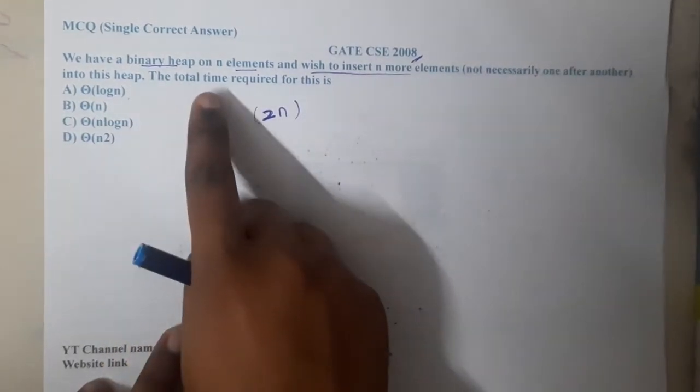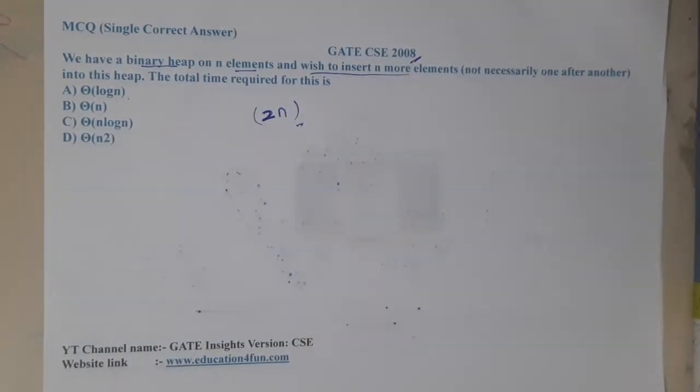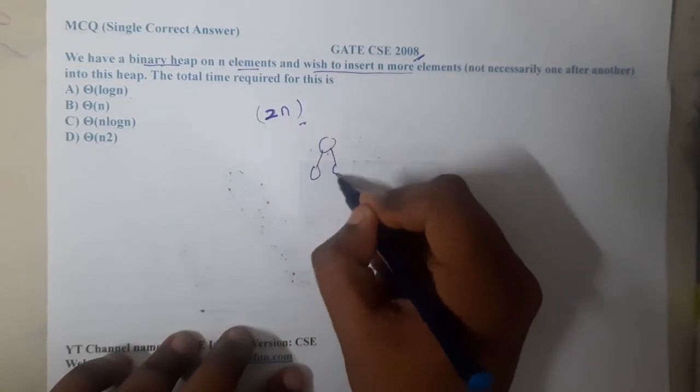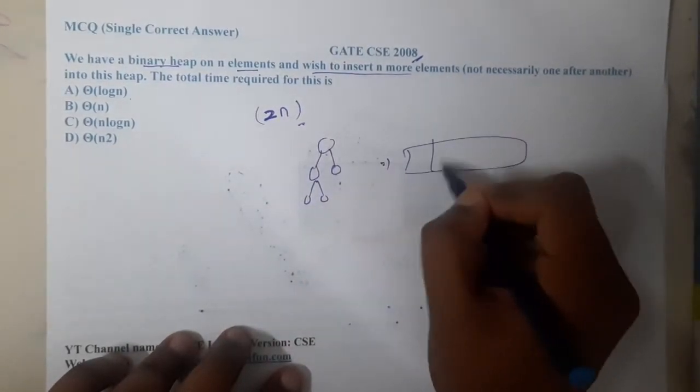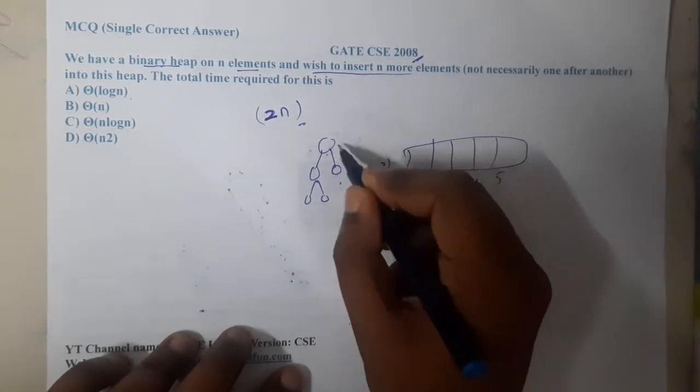The total time required for this is... this question seems to be really straightforward. So already we are having a heap. For our easy understanding, let us assume we are using an array representation. First element, second element, third element, fourth element, fifth element - one, two, three, four, five.